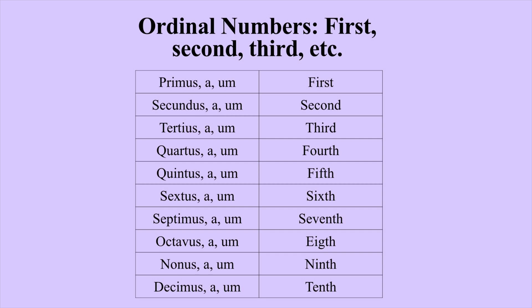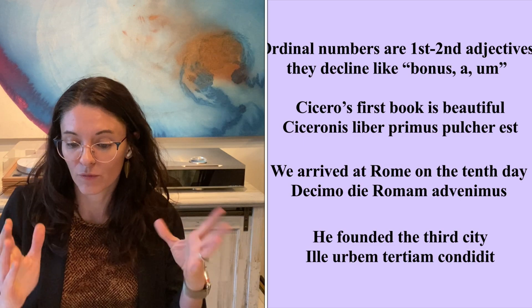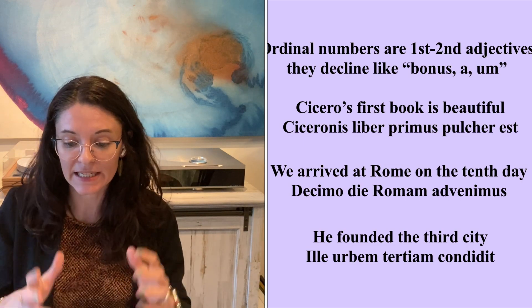As I said, and as you could probably tell from how they were written, all of these are first/second declension adjectives. This means that they decline like bonus -a -um, like magnus -a -um — adjectives we already know how to use. Let's look at a few sentences.